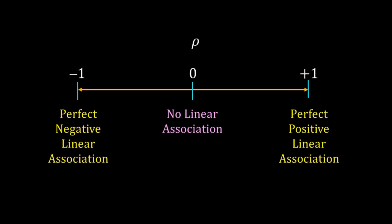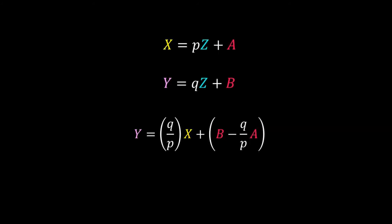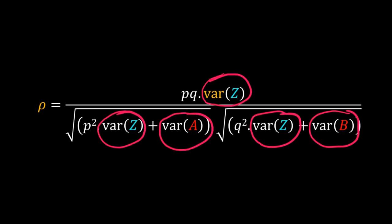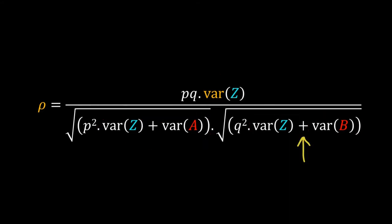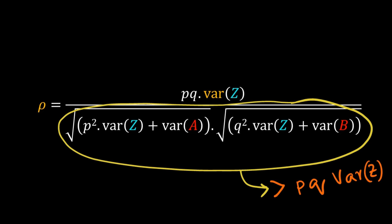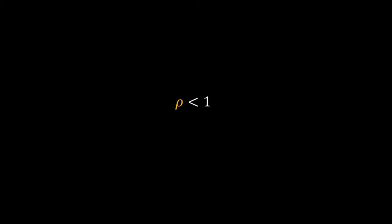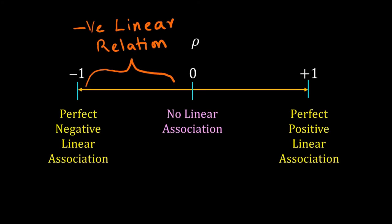So for a perfect linear relation, the Pearson correlation coefficient is plus or minus one, and when x and y are independent or have no linear association, Pearson correlation is zero. In more realistic cases where z, a, and b are all random variables, there is a linear association but the data is noisy. Adding variances of a and b makes the denominator larger than the numerator, so rho is less than one — falling either between zero and −1, or between zero and +1.